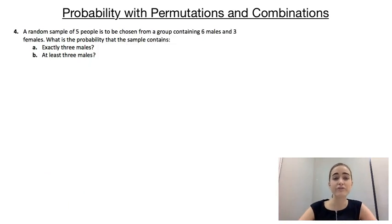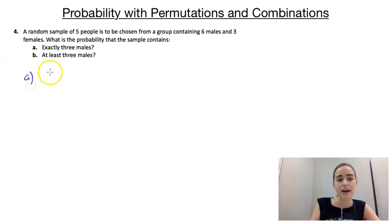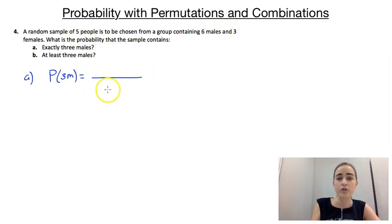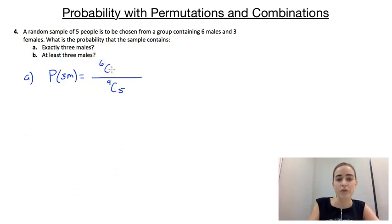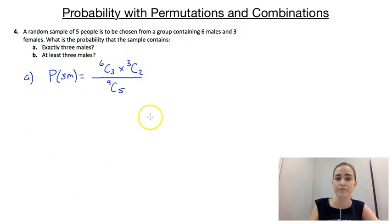Our last example says a random sample of five people is to be chosen from a group containing six males and three females. For part A, what is the probability that the sample contains exactly three males? The total ways to choose five people from nine is 9C5. For exactly three males, we choose three from six males — 6C3 — and the remaining two must be females chosen from three — 3C2. Working that out gives a probability of 10 over 21.